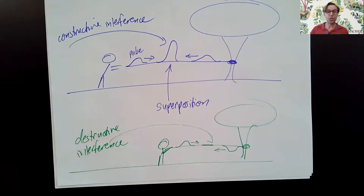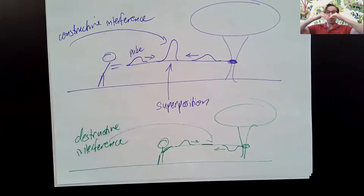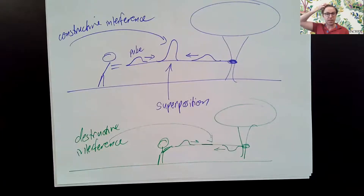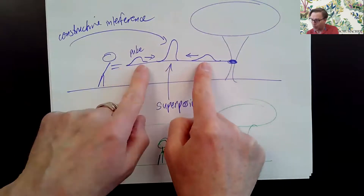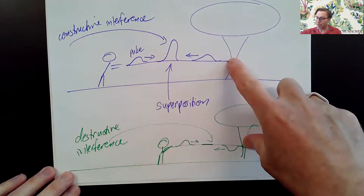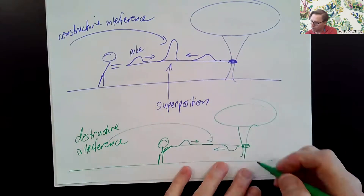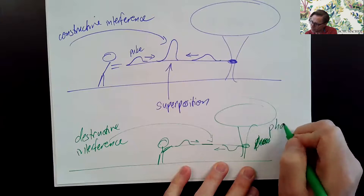When two things are at the same place at the same time, they interfere. Both of these are examples of interference. Two up bumps or two down bumps would be constructive interference, but one of each is called destructive interference. I could make that happen by sending a wave along, having it reflect, and then sending another wave. When we have reflection, sometimes things get flipped over, sometimes they do not. This flipping over is called a phase change.